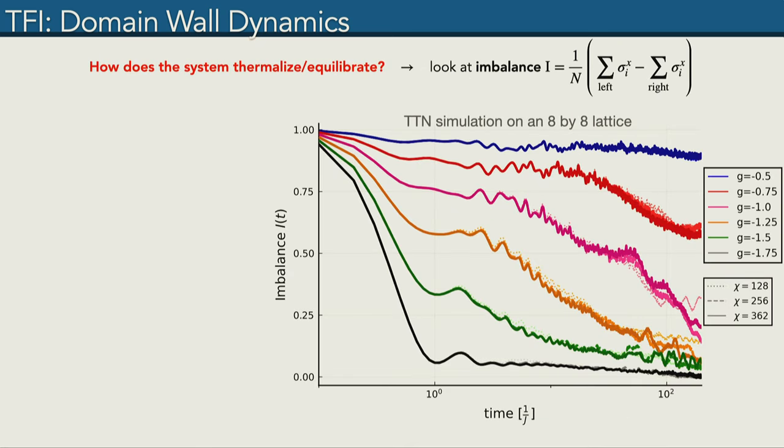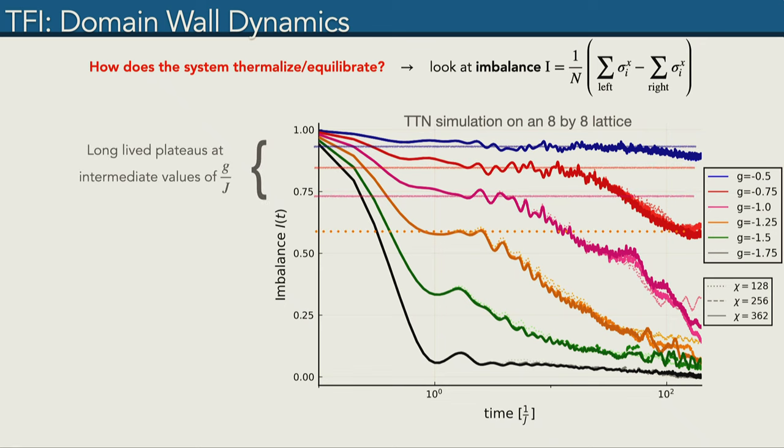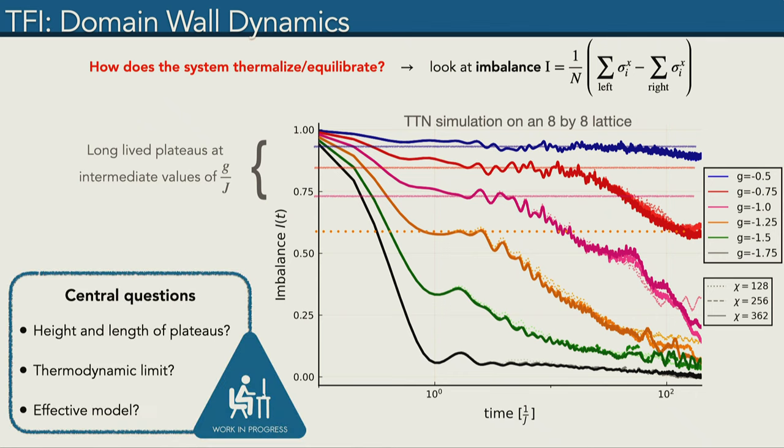One quantity one can look at in that case is the so-called imbalance, which is the difference in magnetizations of both halves. We start with a maximally imbalance state, which means we have an imbalance of one, and if the system thermalizes, we will get an imbalance of zero. Here you can see our results for different transverse fields as well as different bond dimensions. One thing that popped out to us is that for these intermediate values of g over J, we observe very long-lived plateaus. A couple of questions that we were asking ourselves are: can we describe the height and length of these plateaus in terms of this ratio of g over J? What happens in the thermodynamic limit? And is it maybe possible to derive some effective model to describe this type of dynamics?